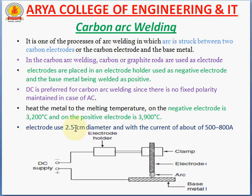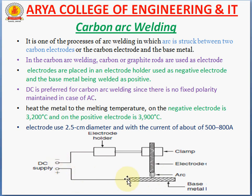First, carbon arc welding. Carbon arc welding is a process in which the arc is struck between two carbon electrodes. The DC supply system is connected to the electrode holder, which is connected with a clamp and electrodes. The base metal, or work piece, is placed below, and the other supply terminal is connected directly to the base metal. In carbon arc welding, carbon or graphite rods are generally used as electrodes. The electrodes are placed in the electrode holder as the negative electrode, and the base metal serves as the positive electrode, as shown in the diagram.